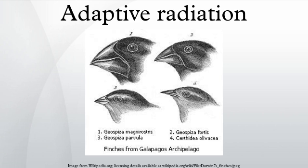Anolis lizards have been radiating widely in many different environments, including Central and South America, as well as the West Indies, and experience great diversity of species just as the finches, cichlid fish, and silverswords. Studies have been done to determine whether radiations occur similarly for these lizards on the mainland as they do on the Caribbean islands, or if differences can be observed in how they speciated. It has been observed that the radiations are in fact very different, and the ecological and morphological characteristics these lizards developed on the islands and on the mainland are unique. They have clearly evolved differently to the environments they inhabit.